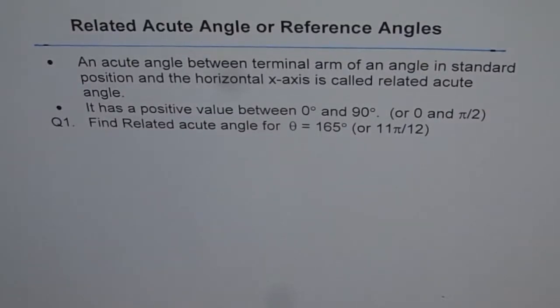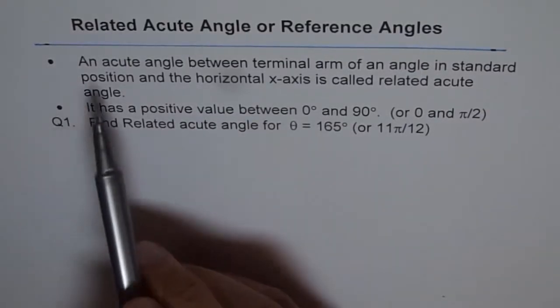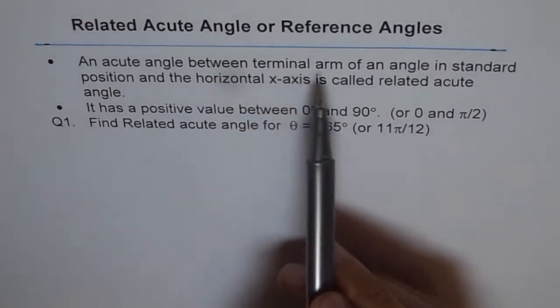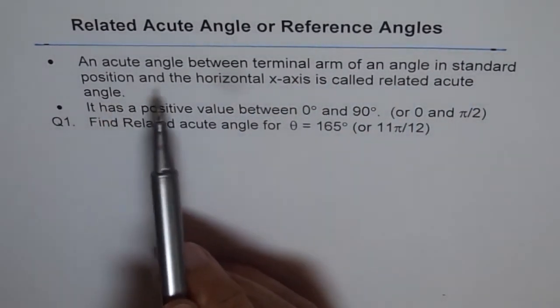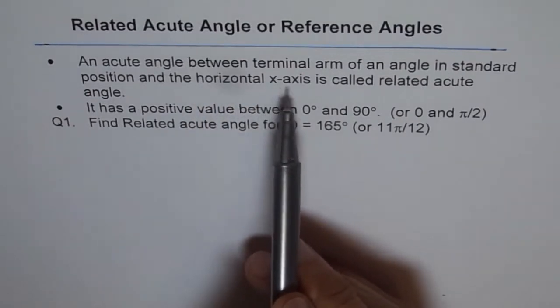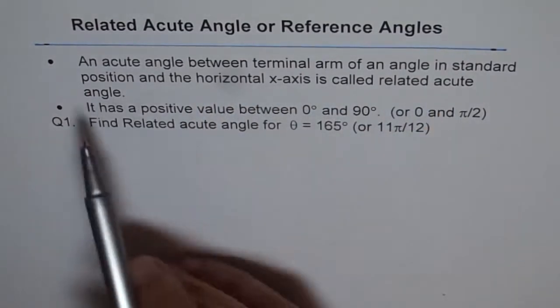Related acute angle or reference angle. An acute angle between terminal arm of an angle in standard position and the horizontal axis is called related acute angle.